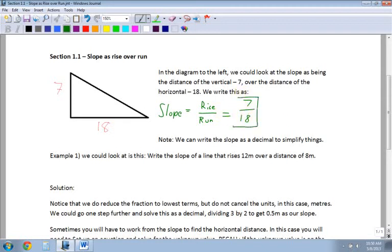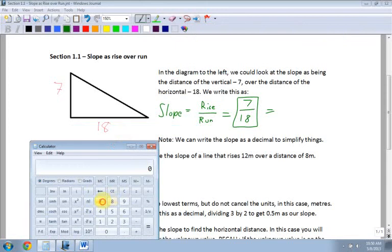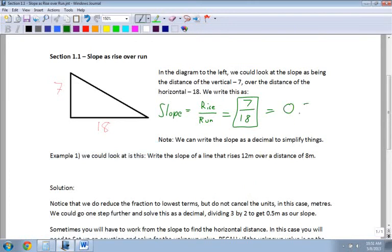This is the preferred way, rise over run, but you can also convert it to a decimal if you want to make things a little easier. So 7 divided by 18 is equal to 0.39. We can write the slope as a decimal to simplify things, but typically it's written as a fraction, where you have the rise over the run. But if you're going to be doing calculations with it, you can use a calculator and calculate it into a decimal.